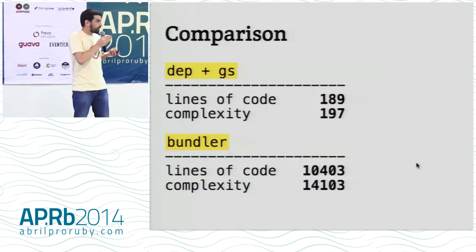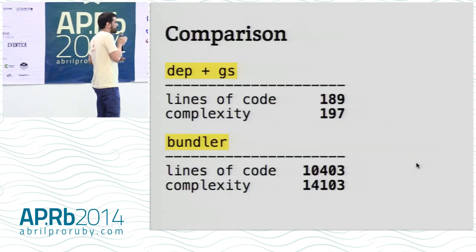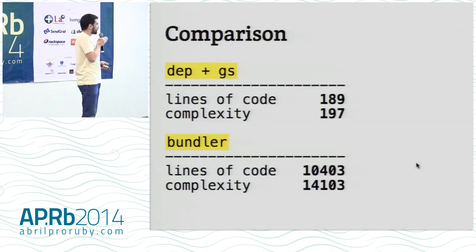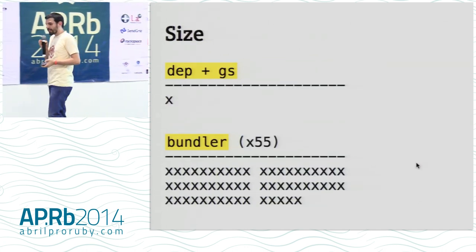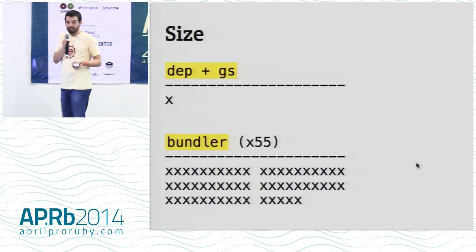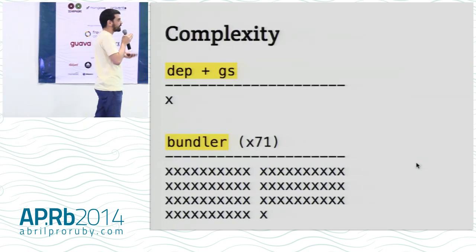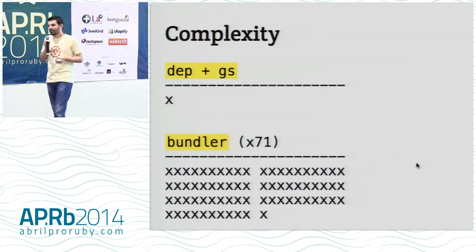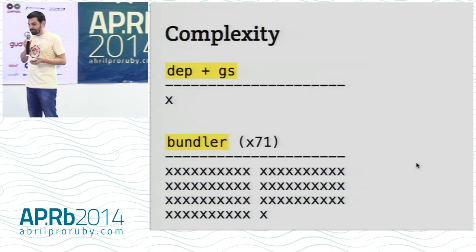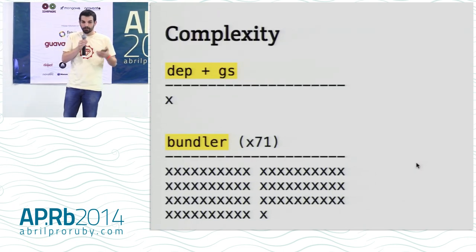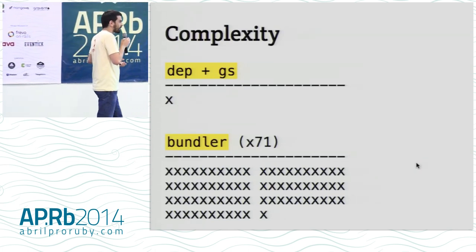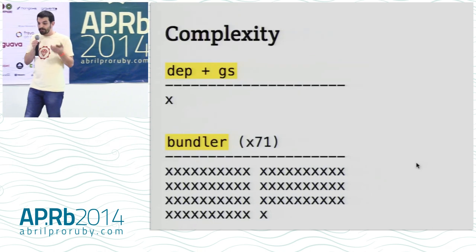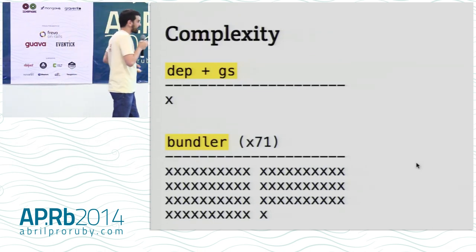Once you learn about the problem, you can choose the right angle to solve it. If you compare the lines of code of one against the other, it's a huge difference — the complexity also correlates to the lines of code. You have one solution that is 50 times bigger and 71 times more complex than the other. This is a lot of waste. There are a lot of people working on and supporting Bundler, and we have a lot of real problems to solve in the world. If they are very smart, they should use that knowledge to solve real problems, not something made up.